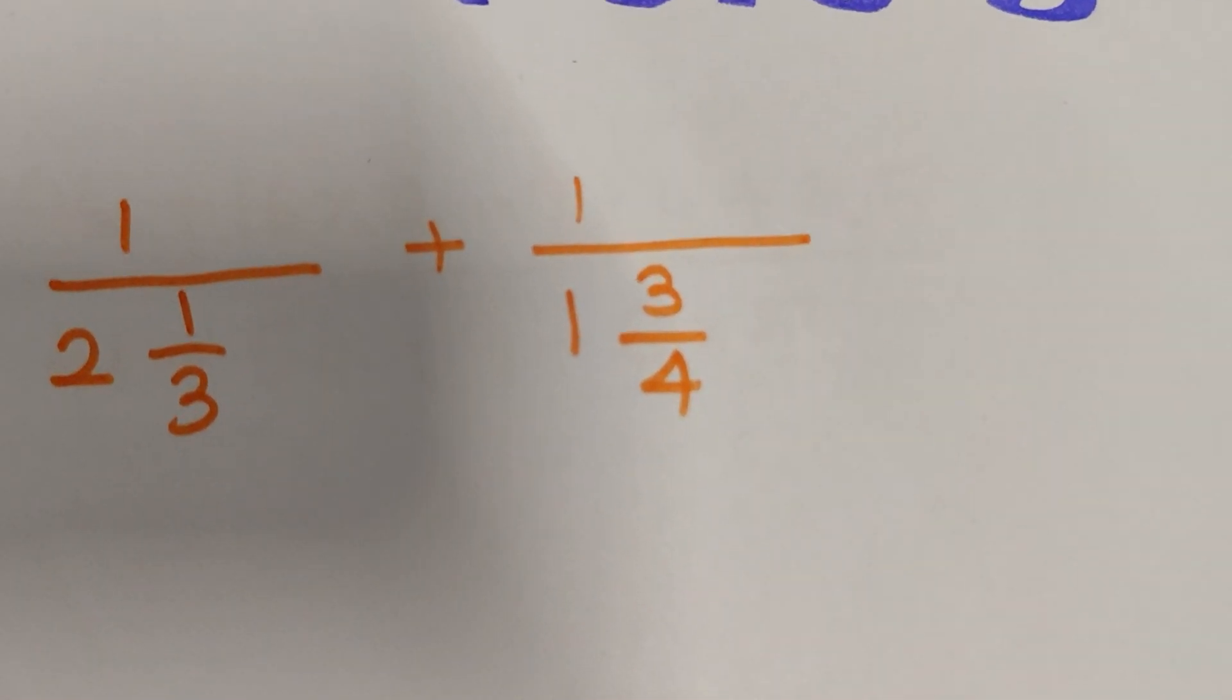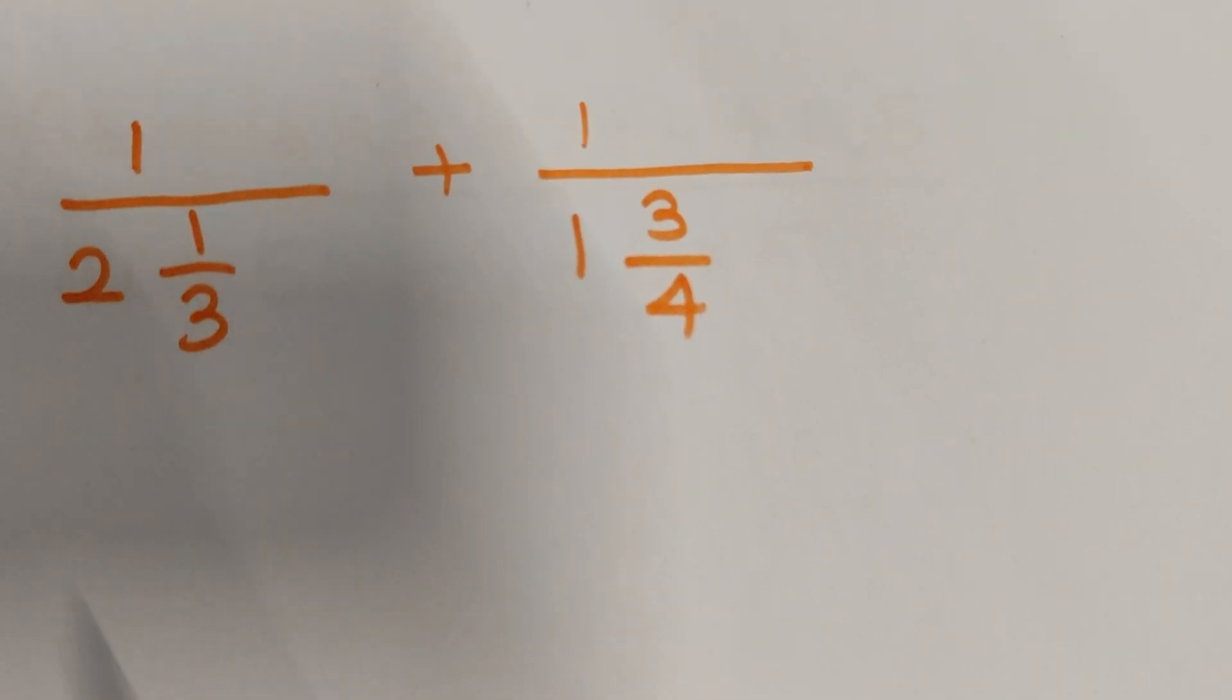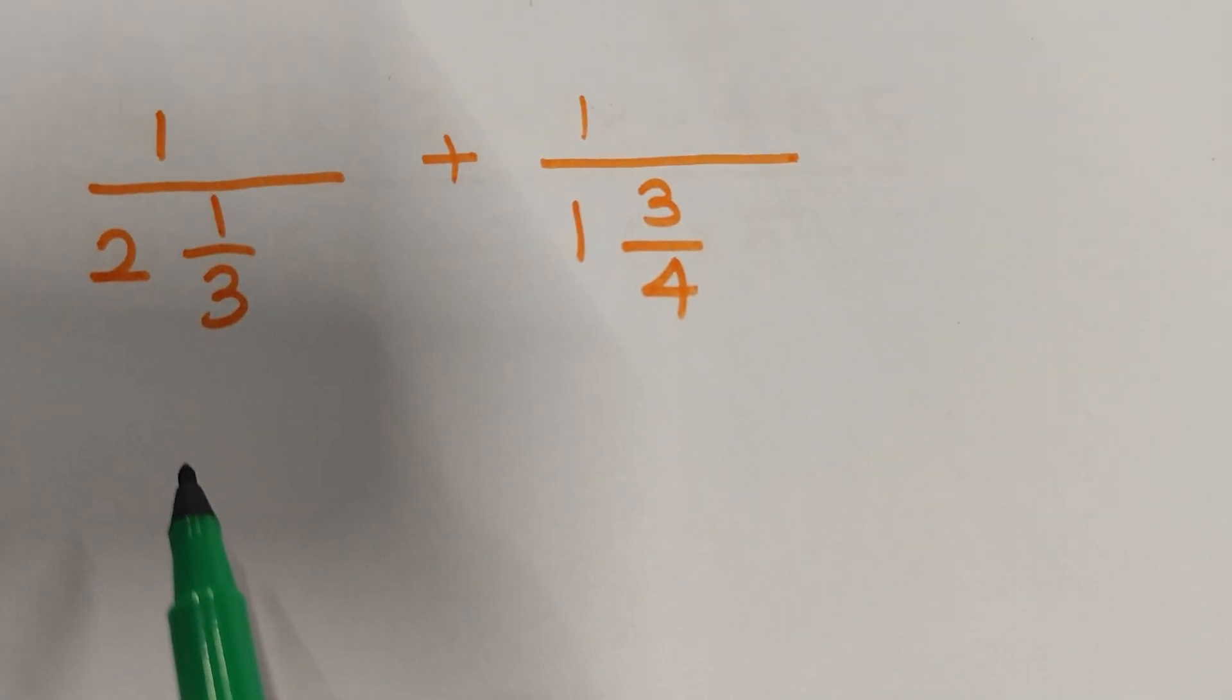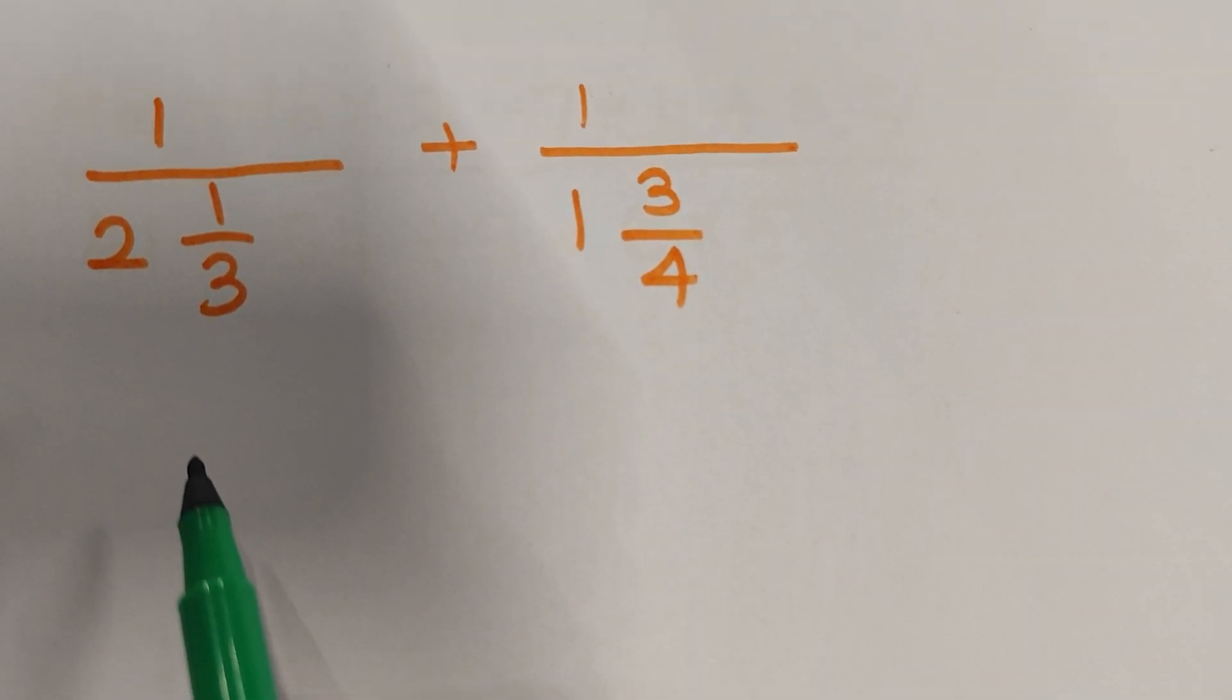Simplification, HOTS-3. Look at the question, the question is so special. 1 divided by 2 and 1/3, plus 1 divided by 1 and 3/4.